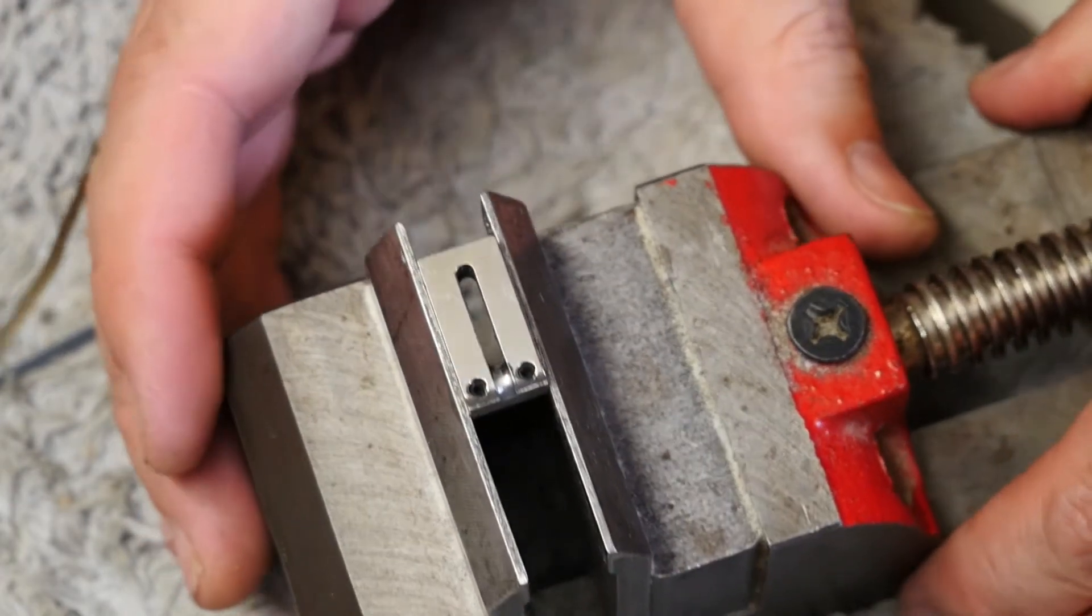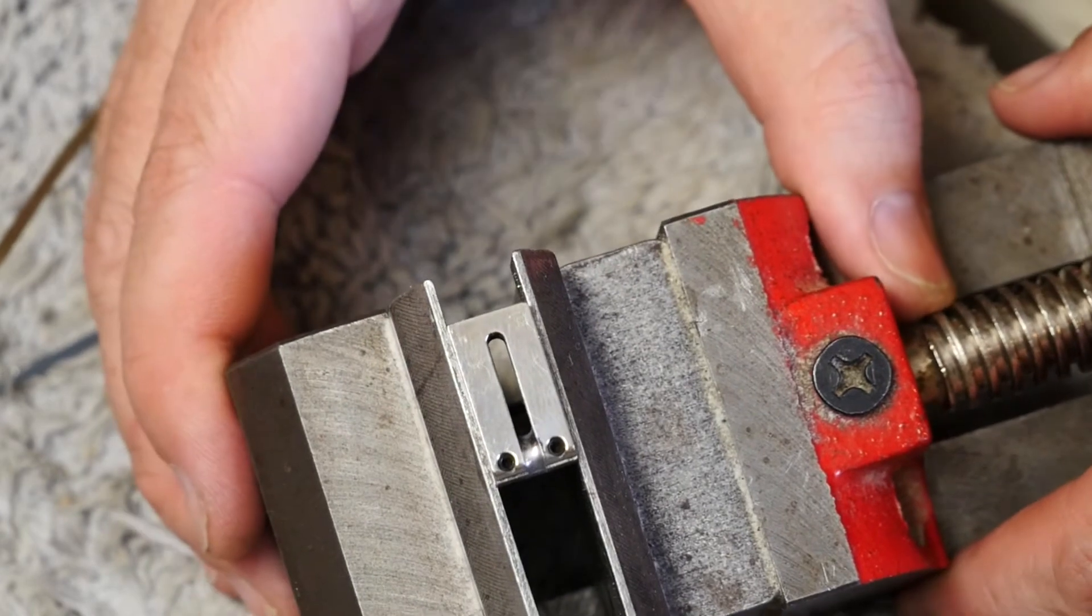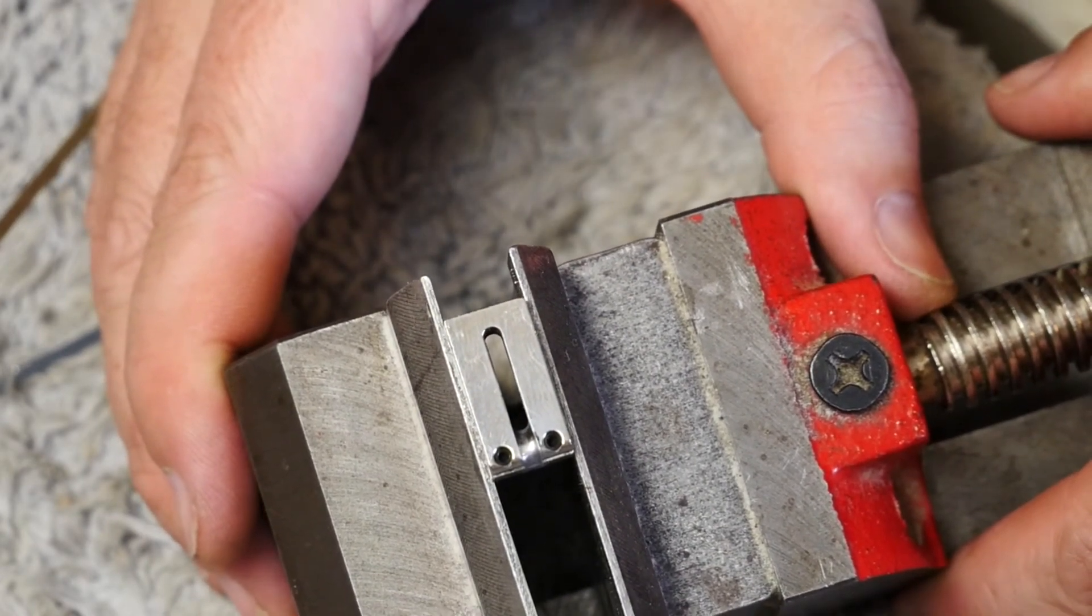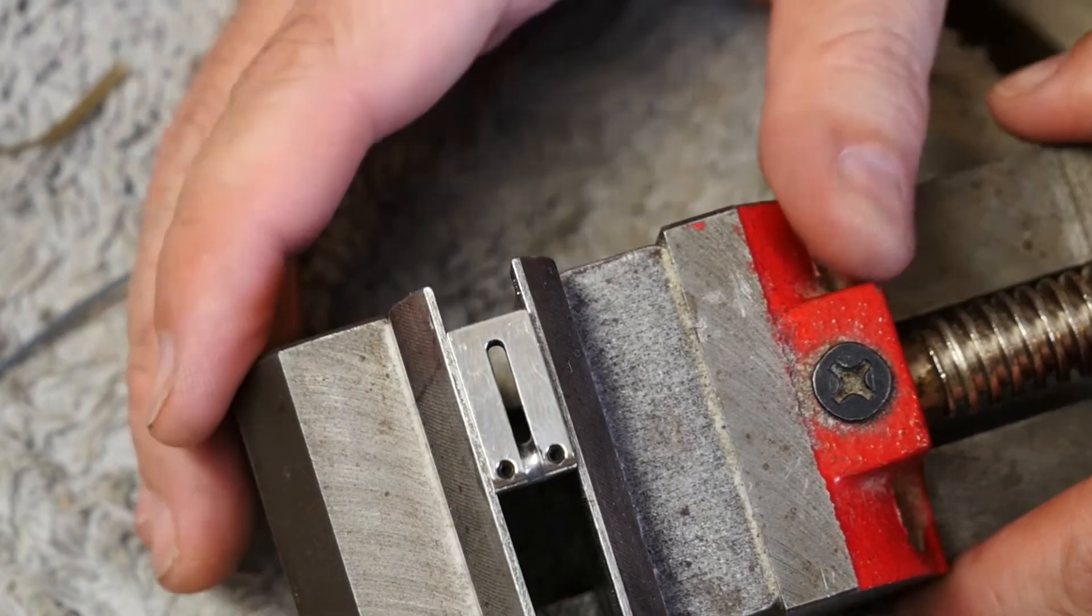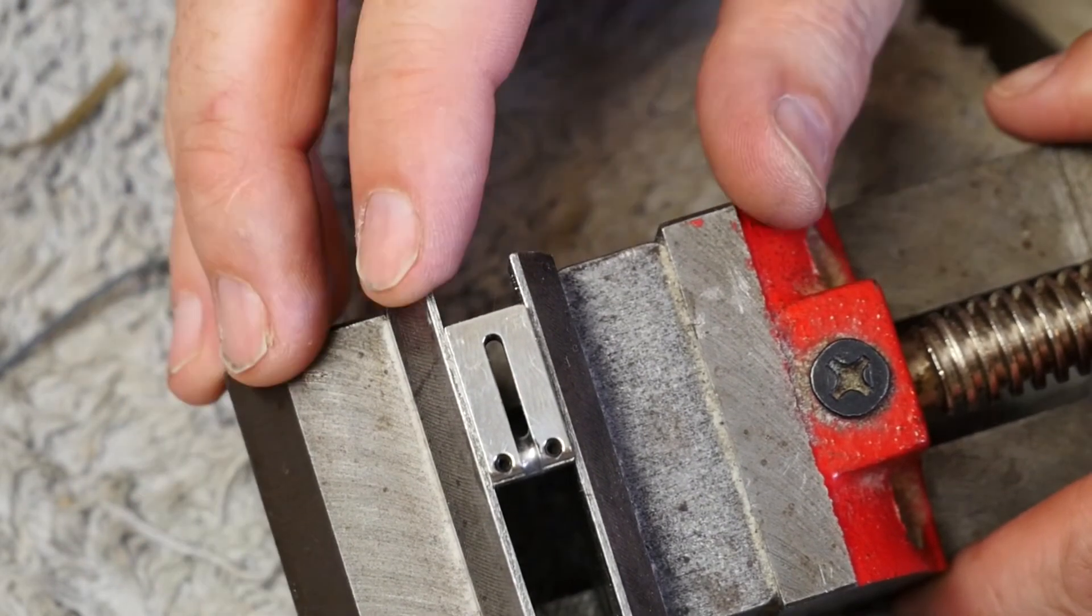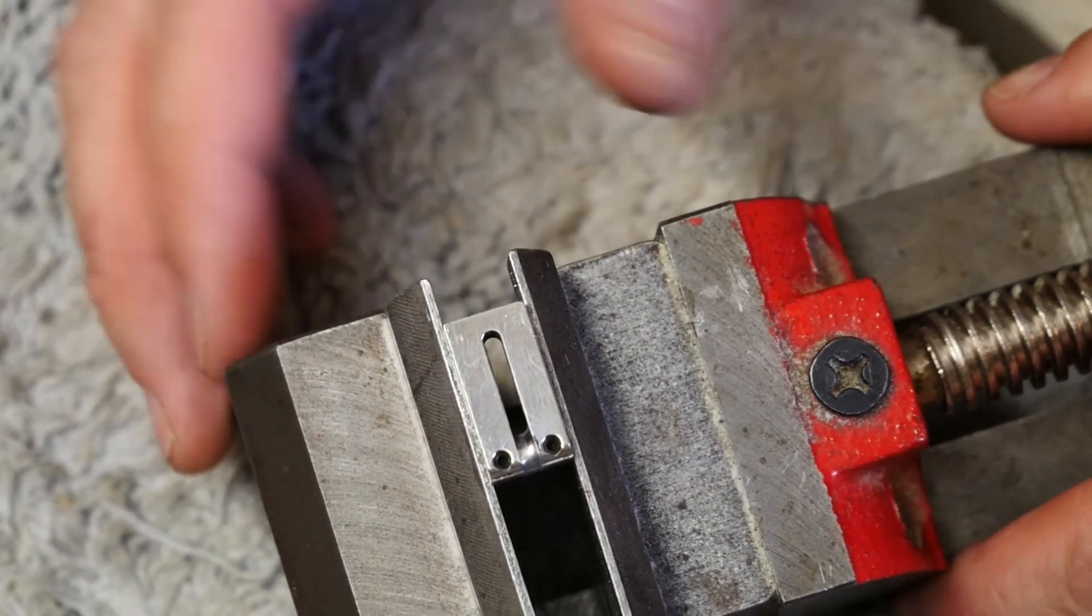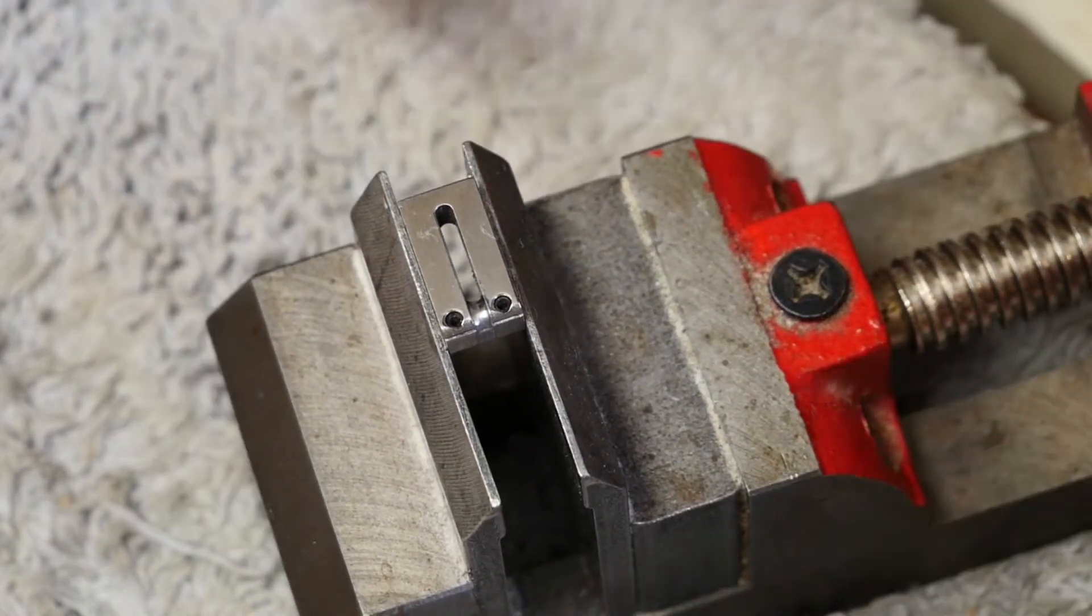Now I don't know how well you can see that, but that's pretty polished now and that's very unlikely to snag a string and break it. So I'm now going to go ahead and do this to the rest of the guitar. Unfortunately there's no way to be absolutely certain that you've got a good repair apart from giving it back to the customer.